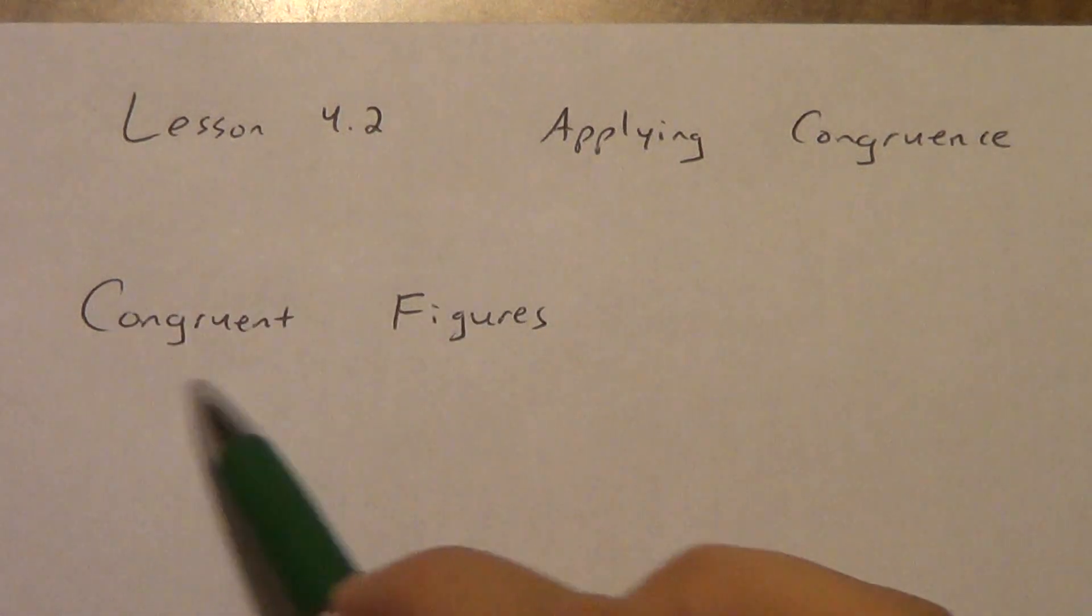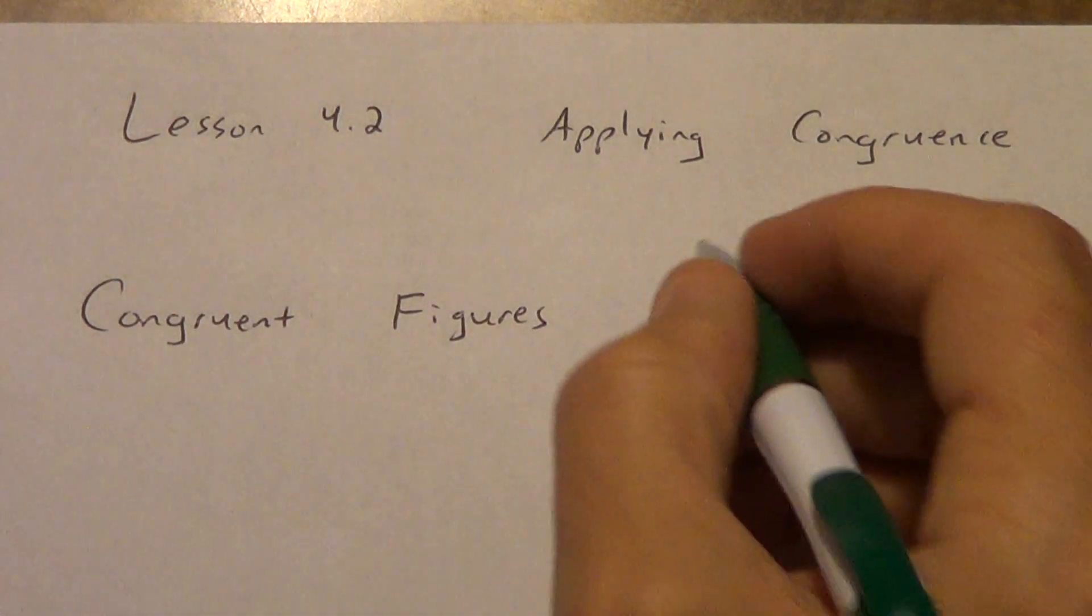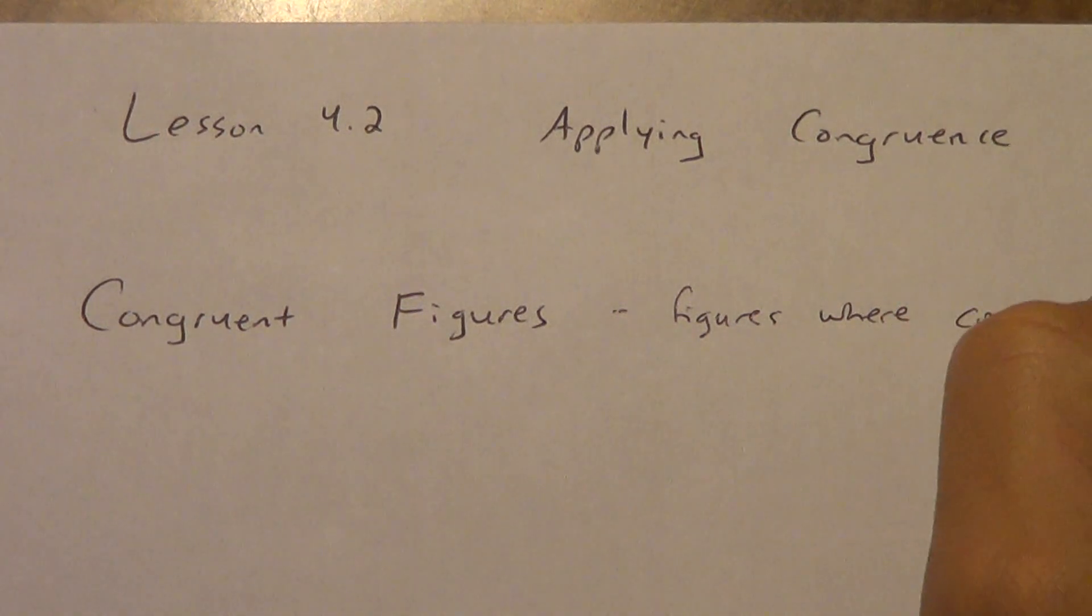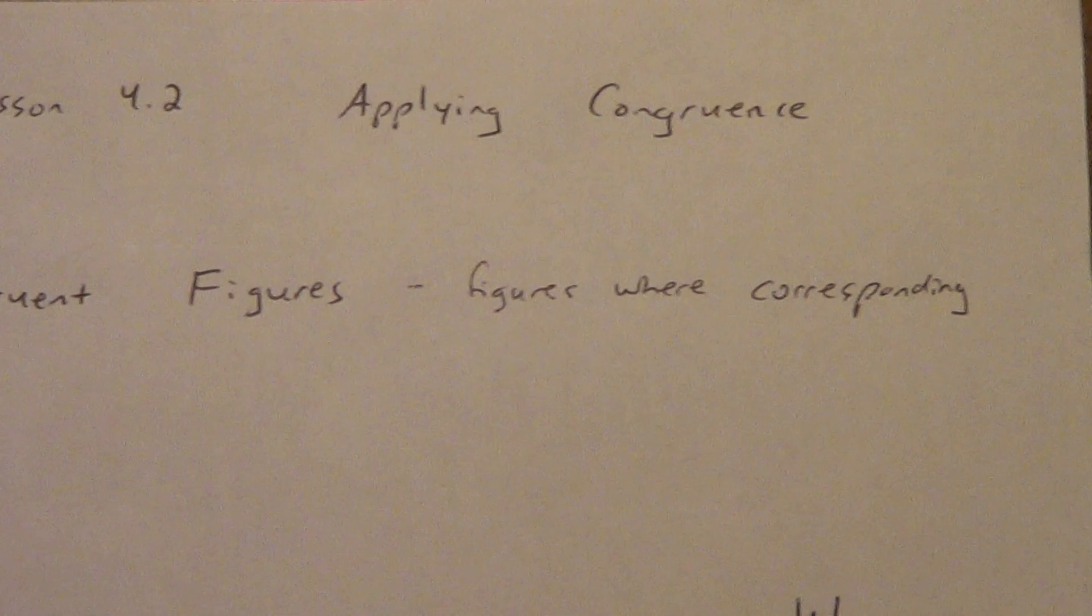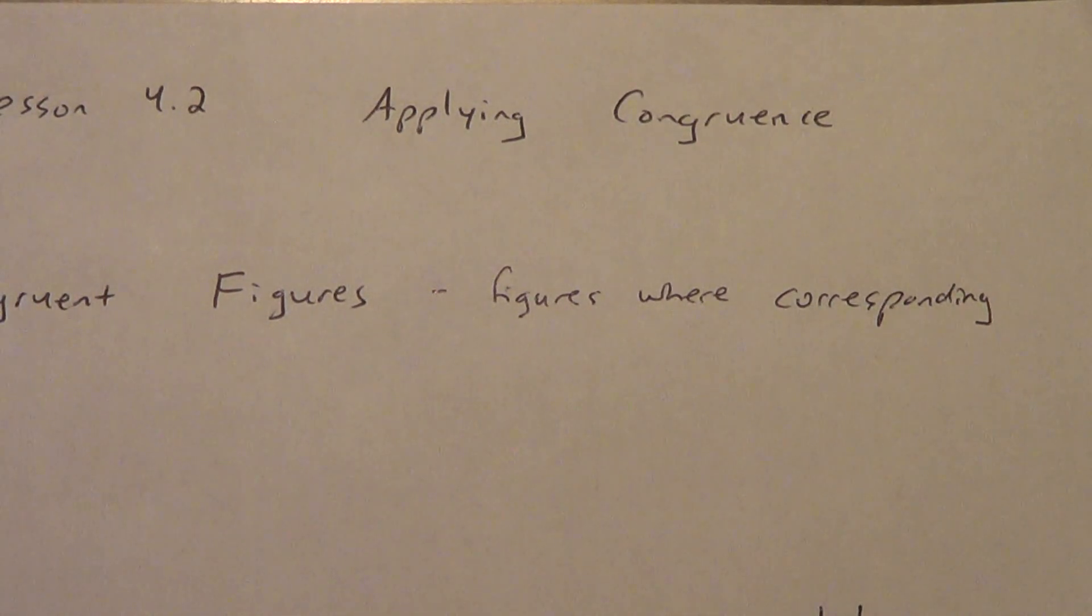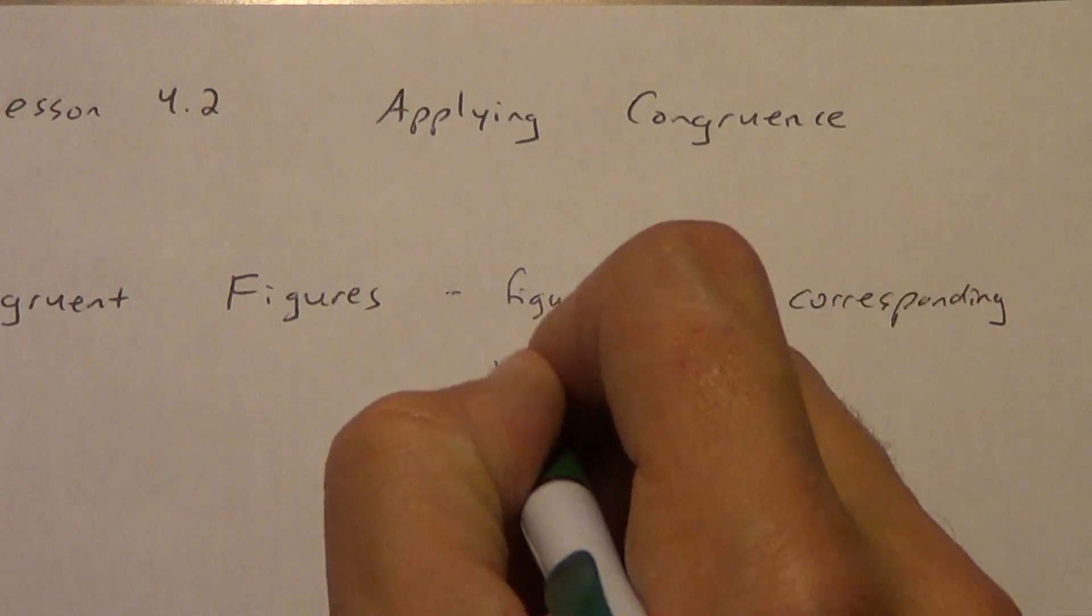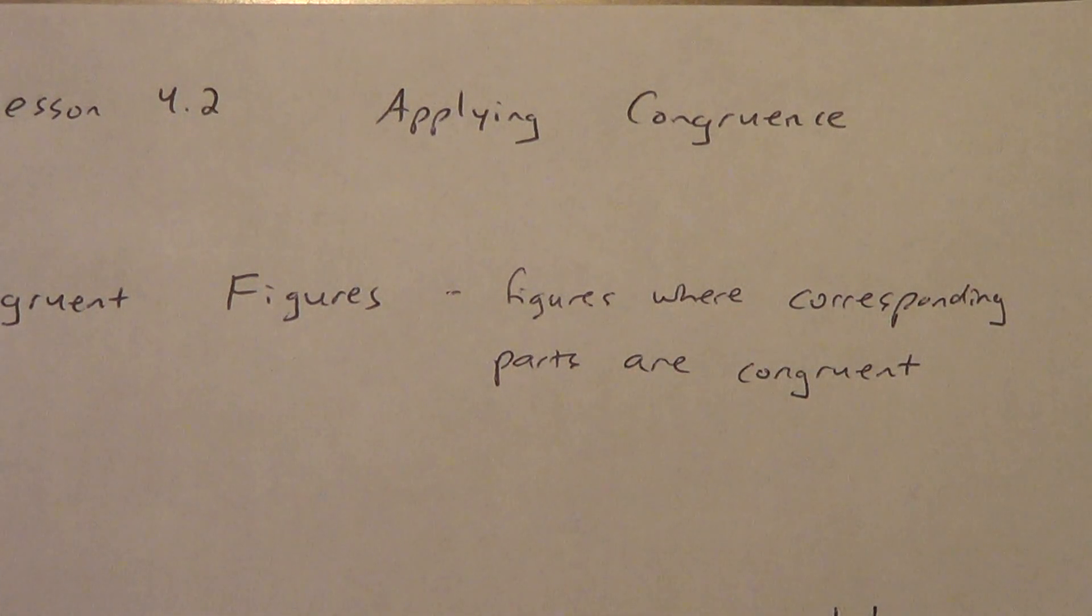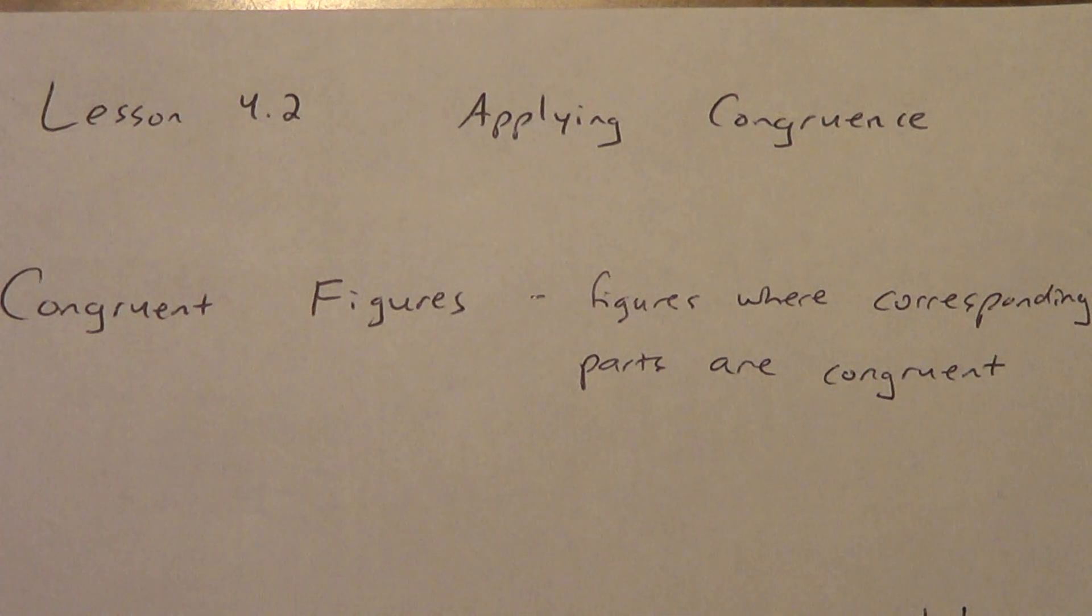Let's talk about the term congruent figures. Congruent figures are figures where corresponding parts are congruent. Now we've used that word corresponding before. We had corresponding angles postulate, and it actually has the same meaning here. Corresponding has the idea of being in the same position as something else. Now, what parts are we talking about? We're going to start with triangles, quadrilaterals, things like that. So in this case, the parts we're talking about are either angles or they are sides. If we get into three-dimensional figures, we might talk about faces that are congruent. But for right now, we're just talking polygons, so we're talking angles and sides.